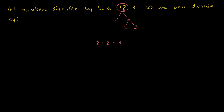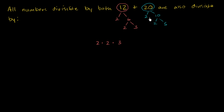Now, any number that's divisible by 20 — let's take its prime factorization — 20 is 2 times 10, and 10 is 2 times 5. So any number divisible by 20 needs to be divisible by 2 times 2 times 5. Another way of thinking about it: it needs to have two 2's and a 5 in its prime factorization.